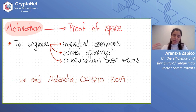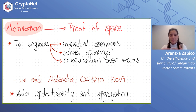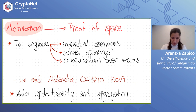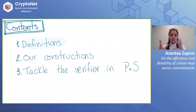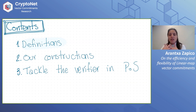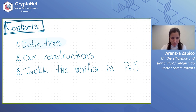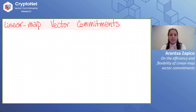Because of the reasons that Anca and Dario explained before, we want to add updatability and aggregation to our linear map commitments. So let me give a bit of a roadmap: I'm going to start with the definitions, explain our constructions, and then present some efficiency results for the special case of proof of space.